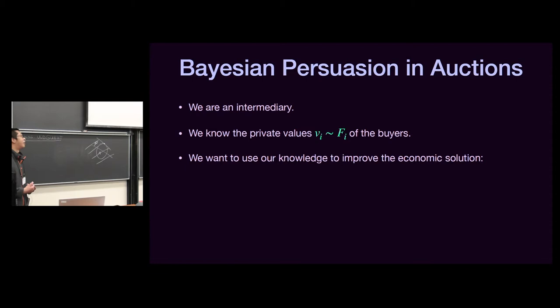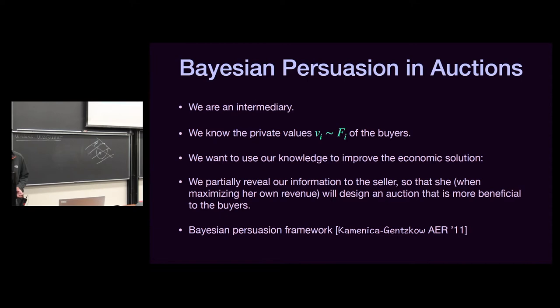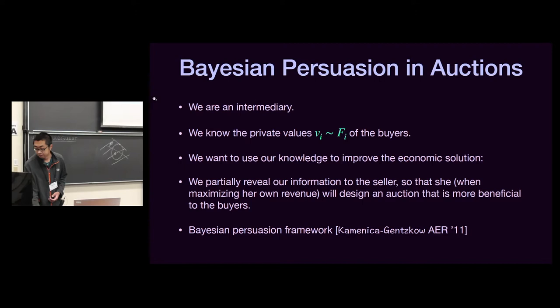In our setting, we are an intermediary and we know the private values of the buyers. We want to use our knowledge to improve the economic outcome. Concretely, we will partially reveal our information to the seller so that she, while trying to maximize her own revenue, will also design an auction that is more beneficial to the buyers. We use the Bayesian persuasion framework, first proposed by Kamenica and Gentzkow.